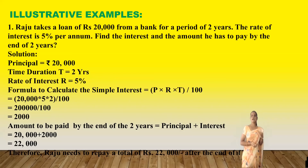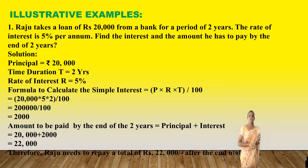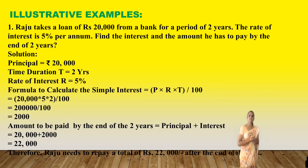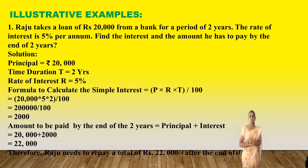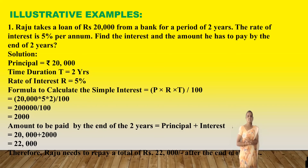Example one: Raju takes a loan of rupees 20,000 from a bank for a period of two years. The rate of interest is 5% per annum. Find the interest and the amount he has to pay by the end of two years. Given: Principal P = ₹20,000; Time T = 2 years; Rate of interest = 5% per annum. Using the formula SI = (P × R × T) / 100 = (20,000 × 5 × 2) / 100 = ₹2,000.